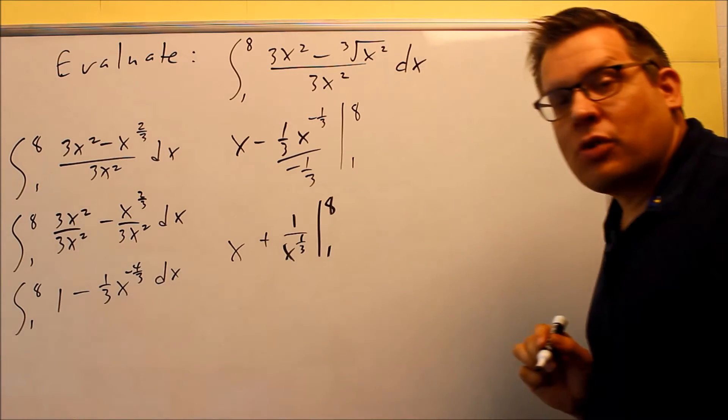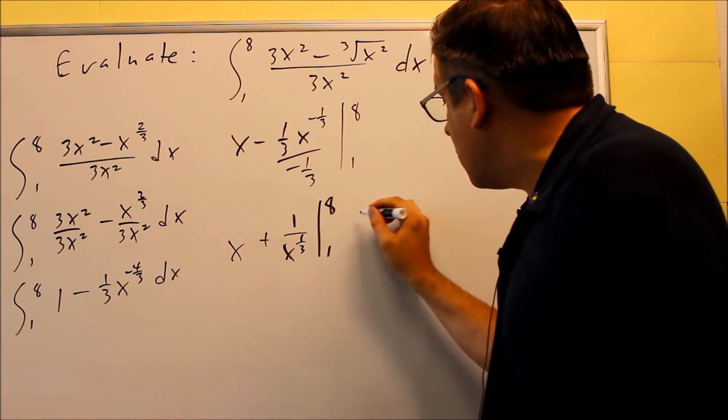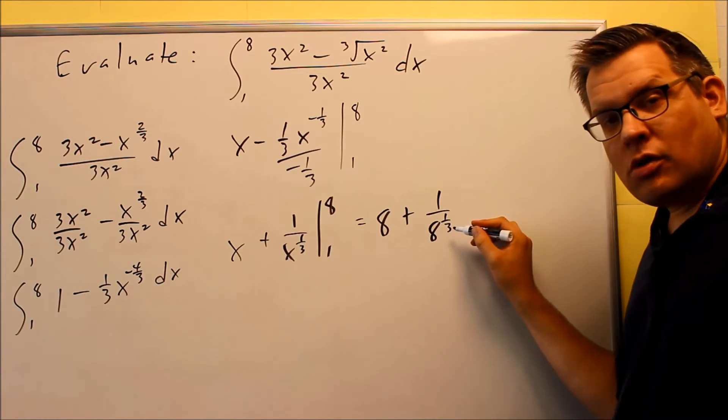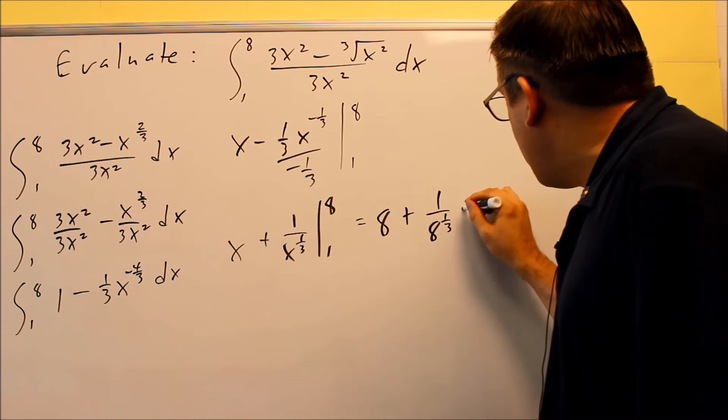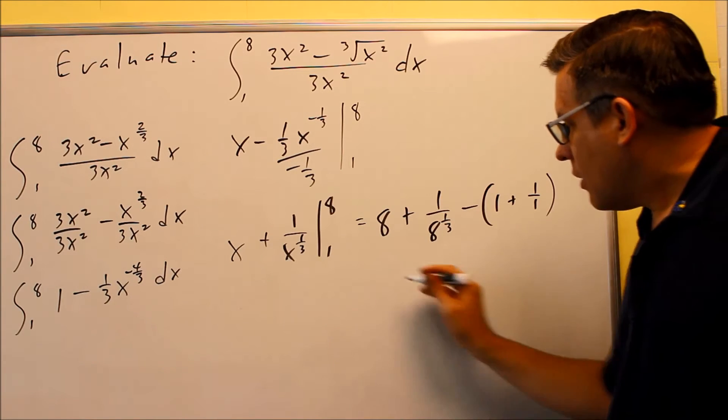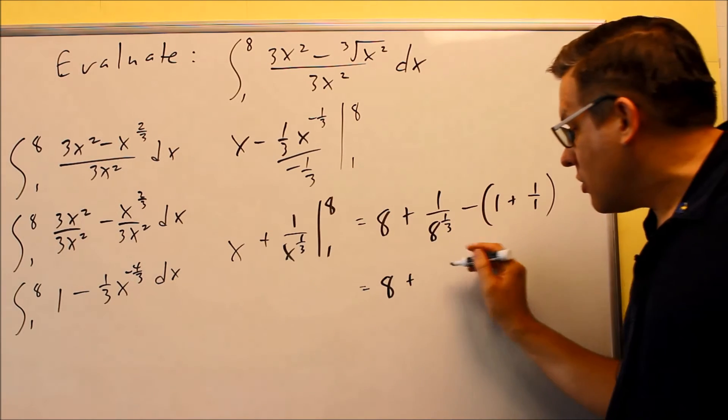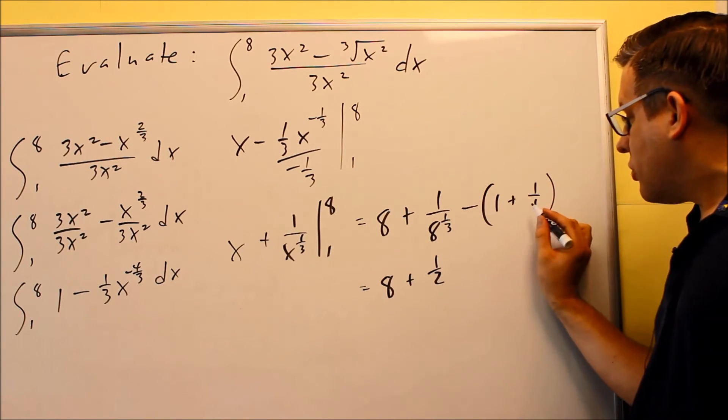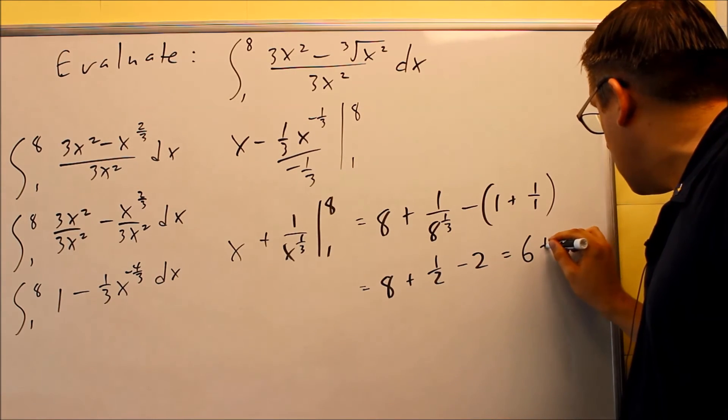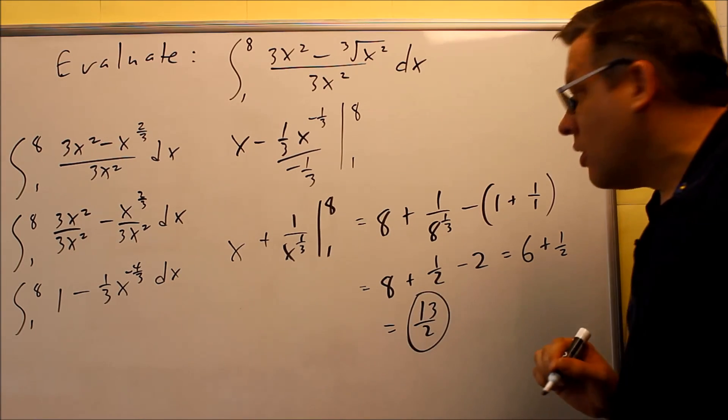We're now ready to plug in our numbers from the original integral by using the first fundamental theorem of calculus. Eight goes in first, eight plus one over eight to the one-third, technically that's one over the cube root of eight. And we have minus one plus one over one you get on the inside. Alright, so this part you get eight plus, this is going to give you a two on the bottom, cube root of eight. And then this part inside is a two, so we have minus two there. And so we end up getting six plus one-half, and then we add that together, we get our final answer of thirteen-halves.